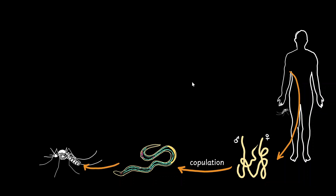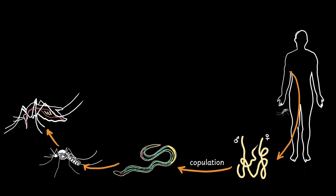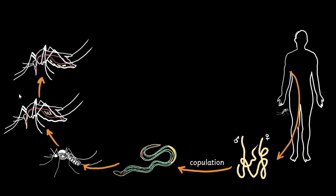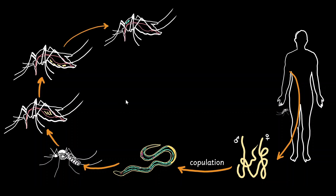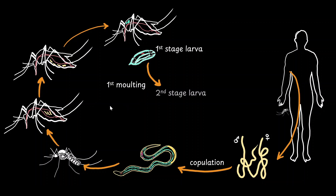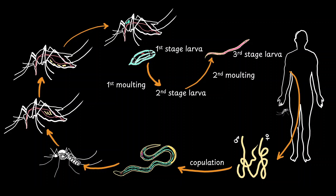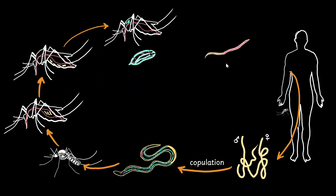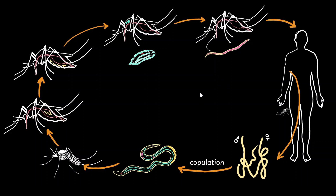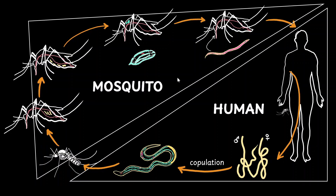When a mosquito bites a human containing microfilariae, the microfilariae enter the mosquito. They reach the midgut where the sheath of the larva gets dissolved. The de-sheathed microfilariae then reach the haemocoel — the cavity outside the gut — and from there dig through the body to reach the thoracic muscles of the mosquito. Here they transform into the first-stage sausage-shaped larva, which undergoes first molting to become the second-stage larva, and then second molting to become the infectious third-stage larva. This third-stage larva reaches the labium of the mosquito, and when the mosquito bites a human, the larva enters the blood and the cycle continues.